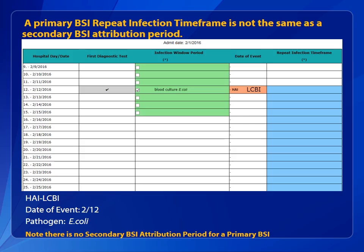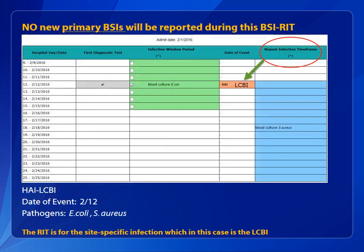Do not confuse a primary BSI repeat infection time frame with a secondary BSI attribution period. When the infection criterion for a laboratory-confirmed bloodstream infection, or LCBI, is met, a primary bloodstream infection is identified. Just like all other site-specific infections, identification of a primary BSI produces a 14-day repeat infection time frame, or RIT — a BSI RIT. Note that a primary BSI never has a secondary BSI attribution period. No new primary BSIs will be reported during this BSI RIT, and in this case the organisms do not have to match. Any additional organisms recovered during the RIT of the same type of infection are added to the originally reported event.